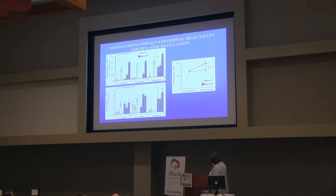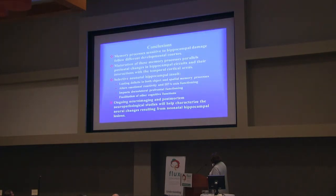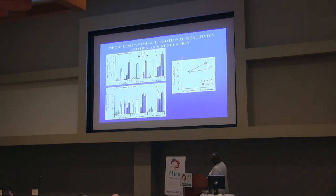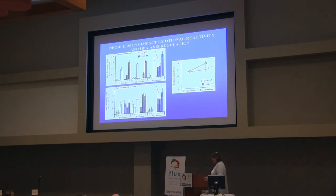Looking at the adults, at baseline the cortisol levels were similar in controls and lesion animals. But after the stressor, there was a big rise in cortisol in controls, whereas the lesion animals showed a very flat stress reactivity — indicating that the lesion has truly impacted the regulation of the HPA axis.